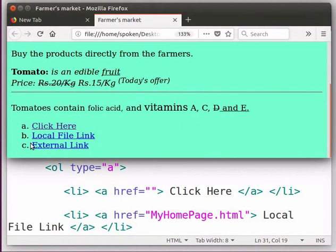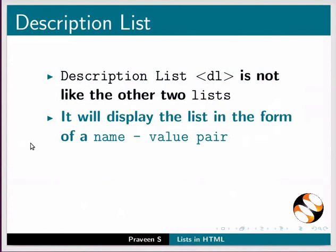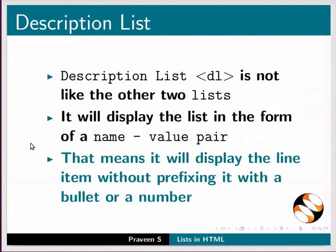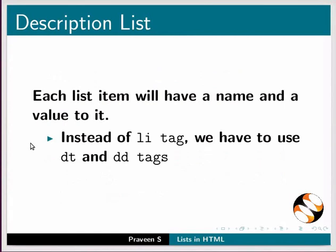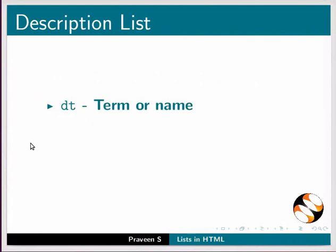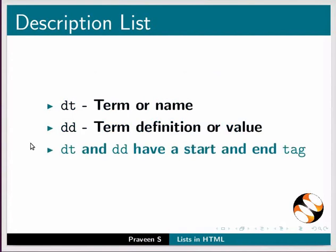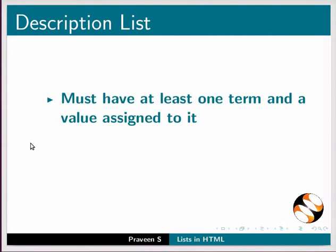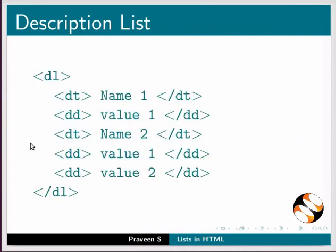Next, we will learn the definition or description list. Description list is not like the other two lists. It will display the list in the form of name-value pairs, meaning it will display the list item without prefixing it with a bullet or a number. Each list item will have a name and a value. Instead of the li tag, we have to use dt and dd tags. dt refers to the term or the name, and dd refers to the term definition or the value. Both dt and dd have a start and an end tag. There must be at least one term and a value assigned to it, and we can have multiple values for a single term. The way to write a description list is shown here.